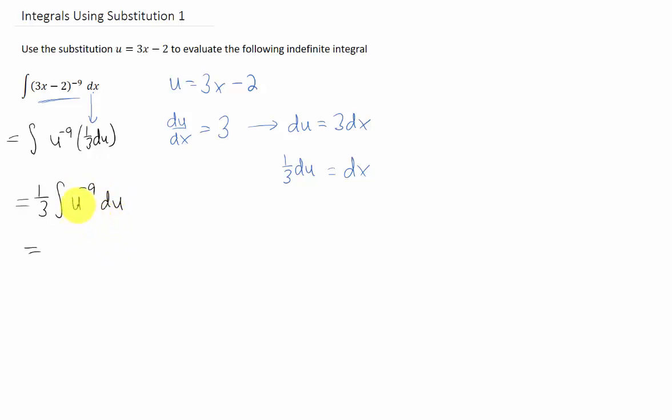To complete this problem, we can just integrate with respect to u by adding 1 to this power, giving us u to the negative 8th power, divide by that negative 8, add a c on the end. Now if we multiply our denominators, we get 24. We can bring a negative outside.